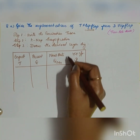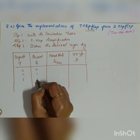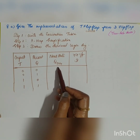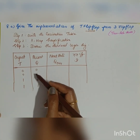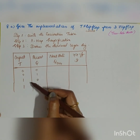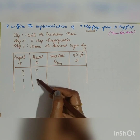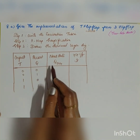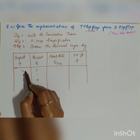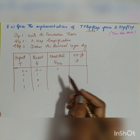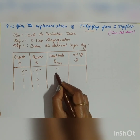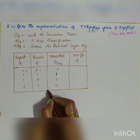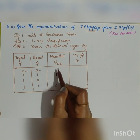The different combinations are: T=0, Q=0; T=0, Q=1; T=1, Q=0; T=1, Q=1. For a T flip-flop, whenever the input and present state are different, the next state Q(n+1) is 1; when they are the same, the next state is 0. So the next state values are: 0, 1, 1, 0.